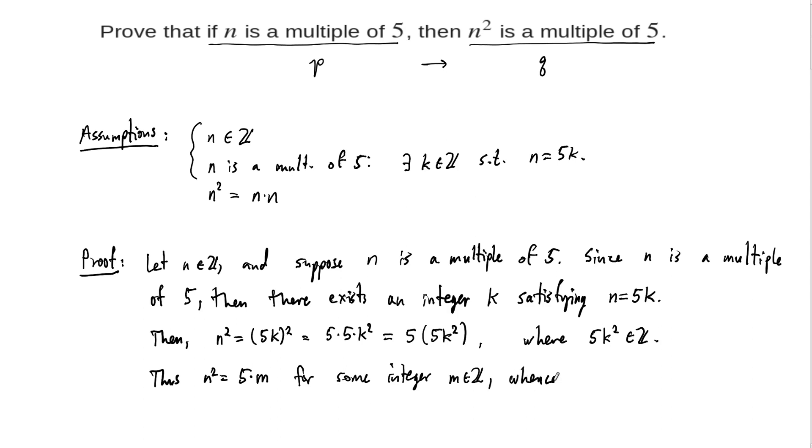And so we can finish this off with saying something like, whence n squared is a multiple of 5. And that's exactly what we wanted to prove. Remember that when we finish a proof in this class, we draw this little box, and then, if you want, you put a little smiley face.